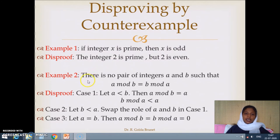Another example is that there is no pair of integers a and b such that a mod b equals b mod a. So, when we want to disprove here,